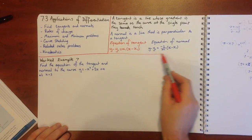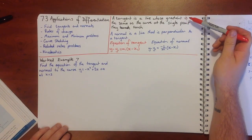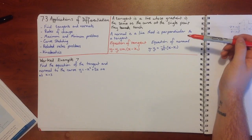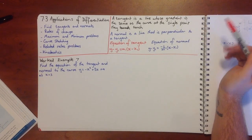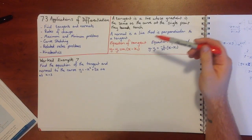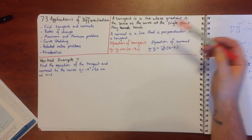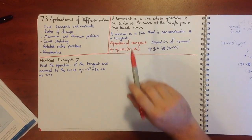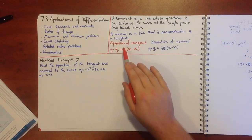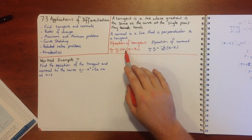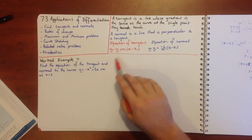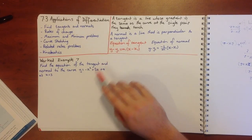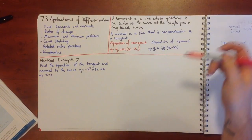A tangent is a line whose gradient is the same as the curve at the single point they touch — we only talk about tangents touching a part of the graph. A normal is a line perpendicular to a tangent. The equation of a tangent is y minus y1 equals m times (x minus x1), where m is the gradient of the curve at our point x1, y1.